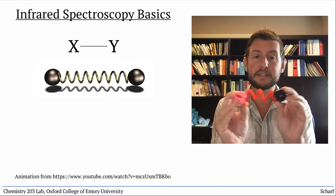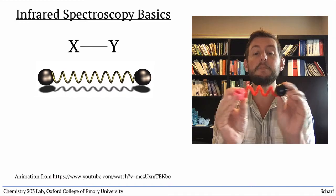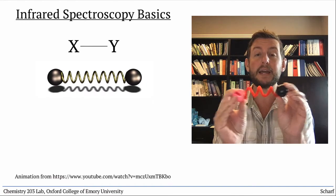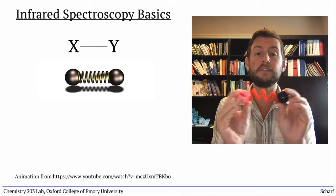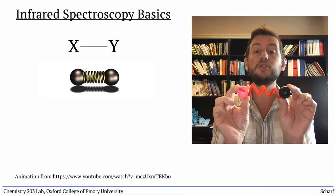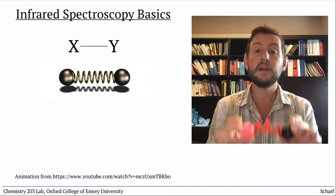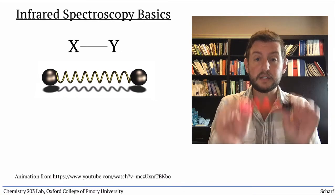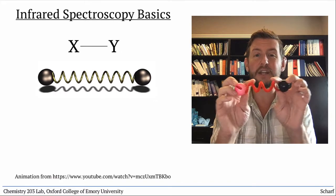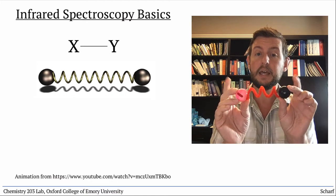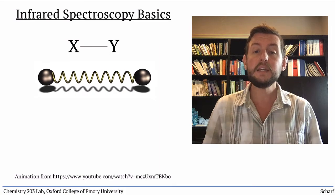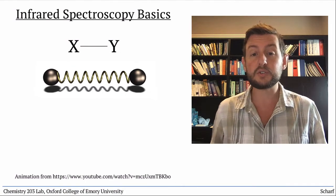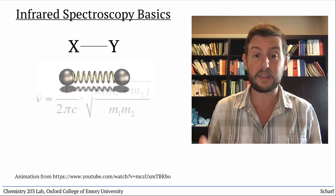Lucky for us chemists, these vibrations can be modeled mathematically by Hooke's law, which says that the frequency of a bond vibration depends on two key factors: the strength of the bond, which is kind of like the tautness of the spring, and the masses of the atoms at the ends of the spring. The equation that chemists use to describe this dependency is this.